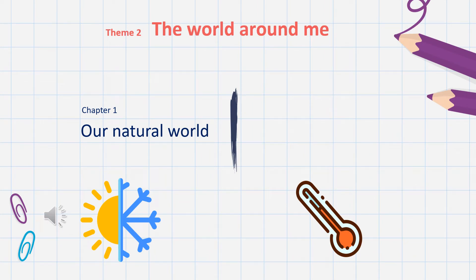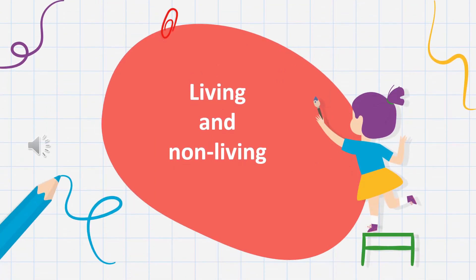Theme 2: The world around me. Chapter 1: Our natural world. Today's lesson is talking about living and non-living. Repeat after me: living. Non-living. Living and non-living.